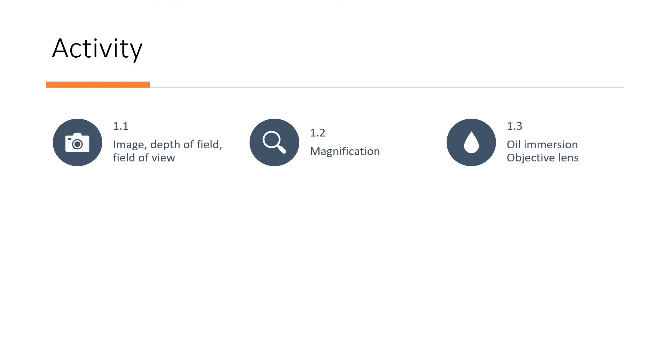There are three activities in Experiment 1, which are Activity 1.1: Determine the image, the depth of field, and the field of view. Activity 1.2: Determine the magnification. Activity 1.3: Using oil immersion.